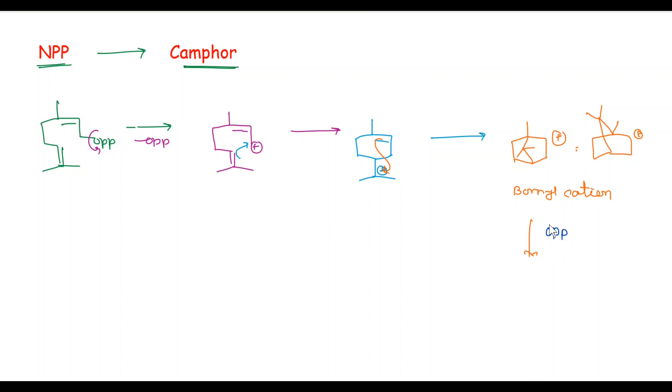In the next step, addition of OPP and we get OPP here. This step is called bornyl diphosphate synthase. Here we get OPP, this is called bornyl.